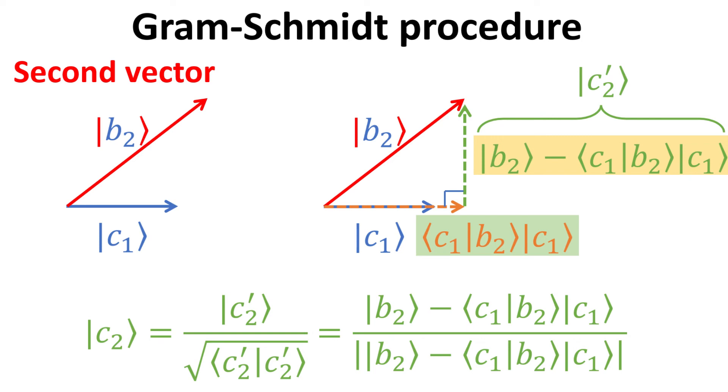We shall denote this as C2 prime. Clearly, C2 prime is orthogonal to C1, but it is not necessarily normalized. Our last step is simply to divide C2 prime with its norm. This gives us the final expression for C2 as shown below.